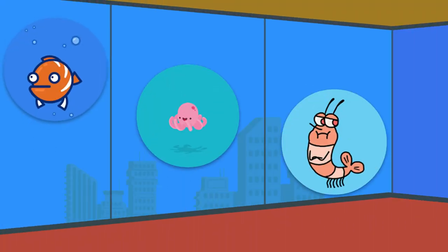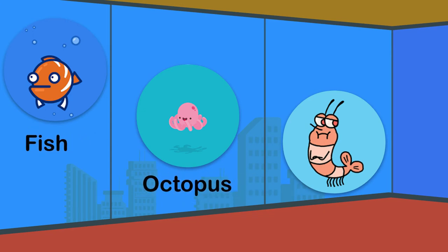Where do animals live? Some animals live on the land. Some live in the water, such as fish, octopus, and prawns.